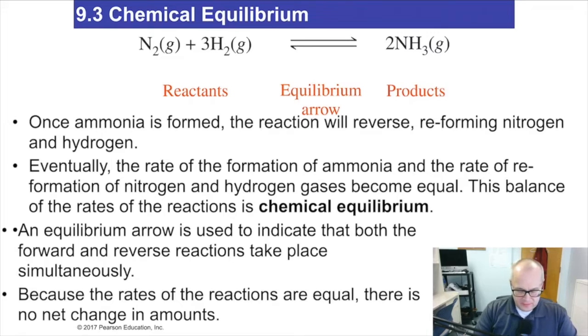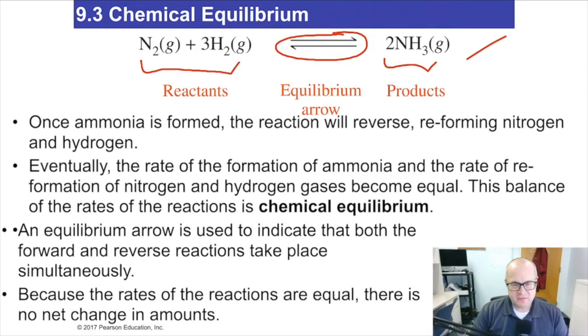Now, take a look at this reaction here. We have some reactants and some products, and we have this arrow system that we talked about in a previous video. Before I didn't define it as what it is, I just said it meant the reaction was reversible. It can go to the right, it can go back to the left. What those arrows are called are equilibrium arrows.